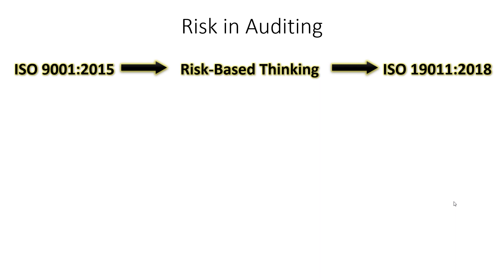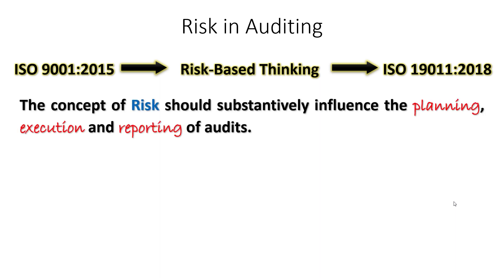In 2018, the ISO standard for auditing, ISO 19011, was updated. One of the major updates to that ISO standard was this idea of risk-based thinking. What the standard says is that the concept of risk should substantively influence the planning, execution, and reporting of audits.